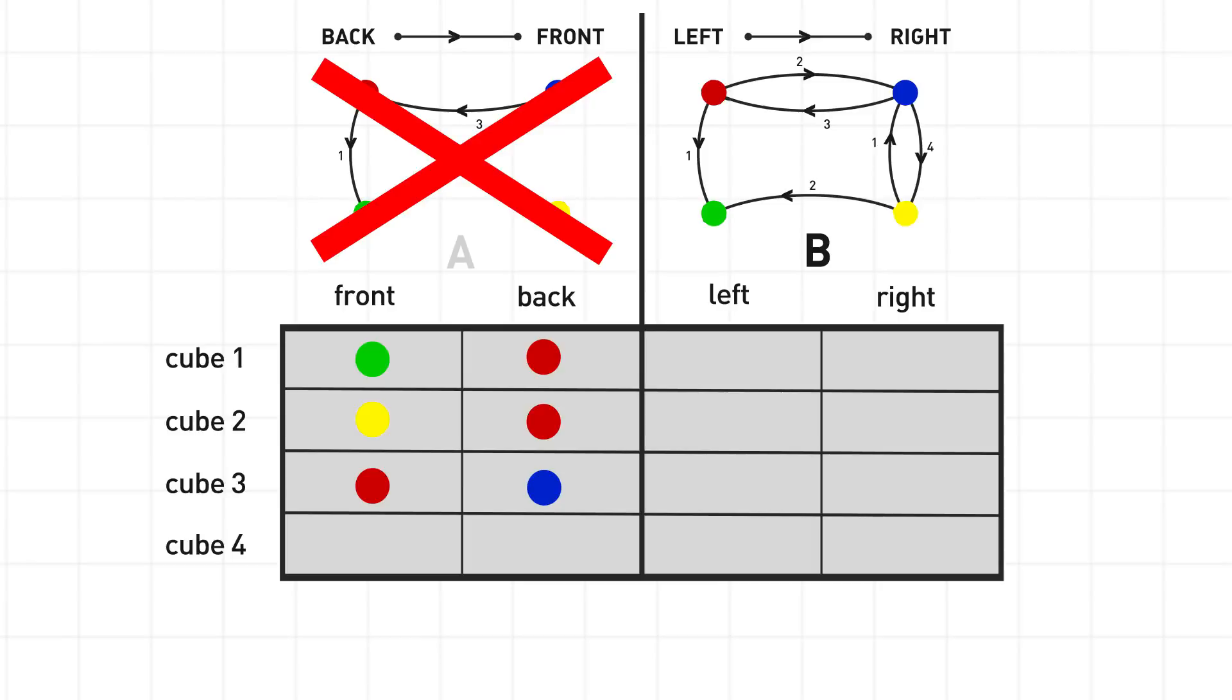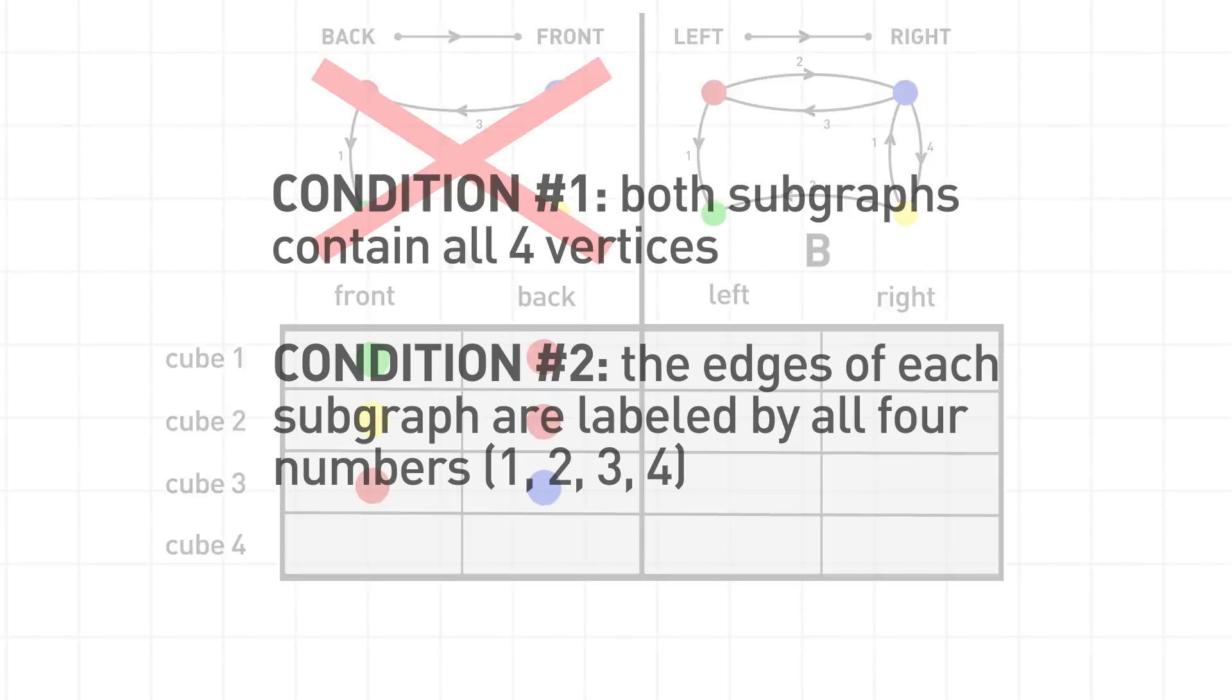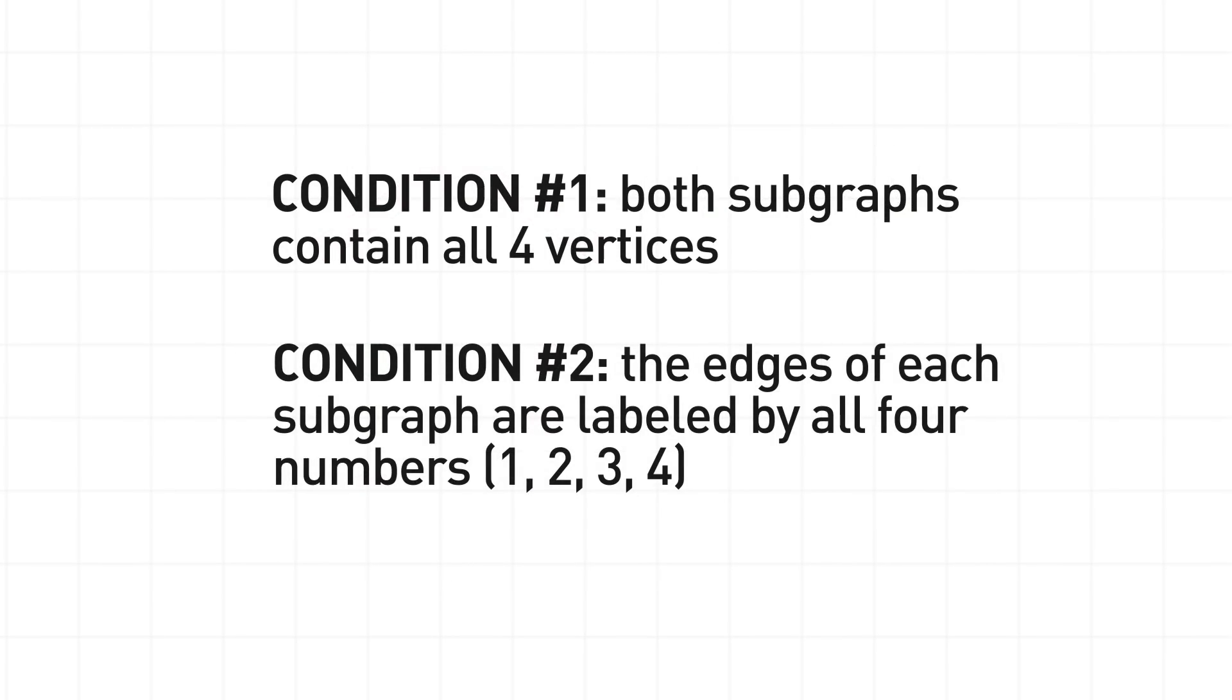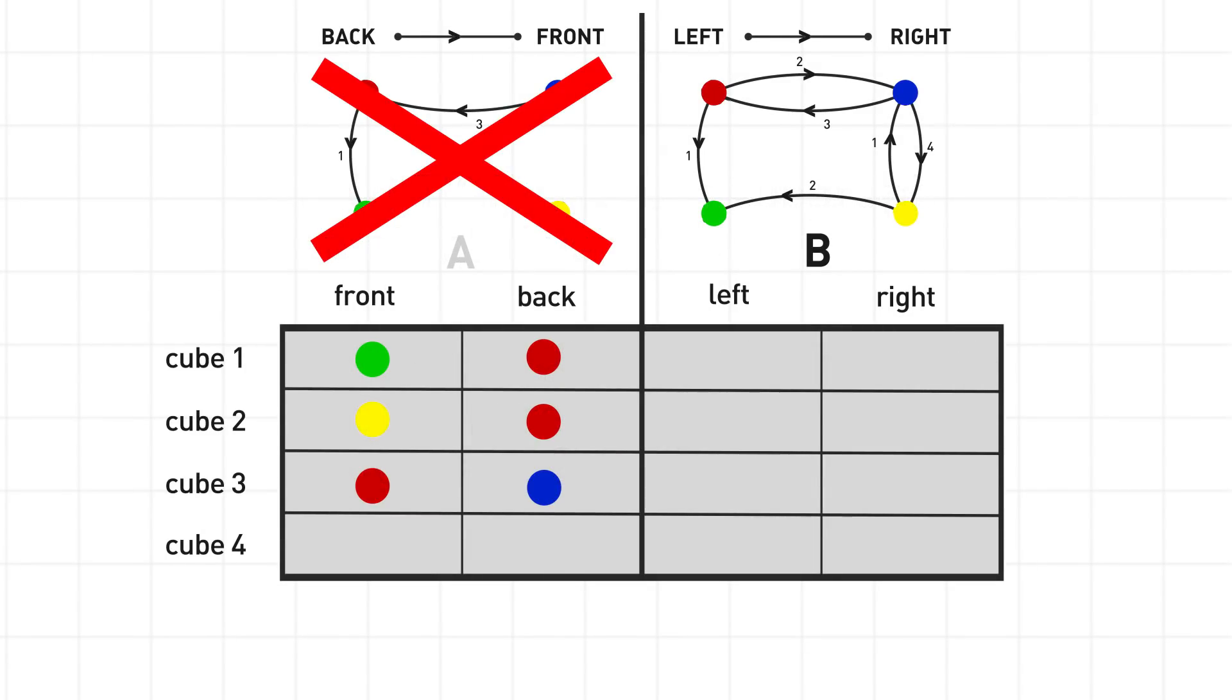This suggests that each subgraph should contain edges from all four cubes. That is, the edges should be labeled by all four numbers 1, 2, 3, and 4. That is condition number two. So, we'll need a different subgraph for A, and we'll come back to it. But what about B?